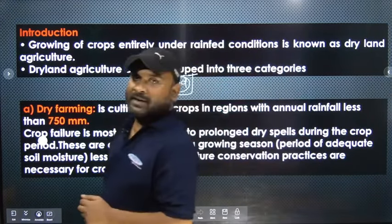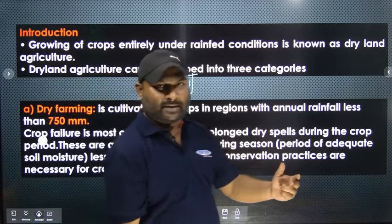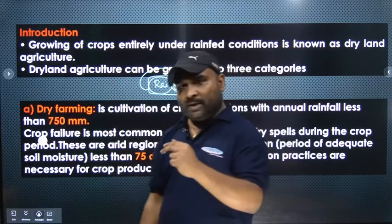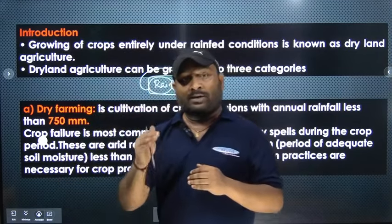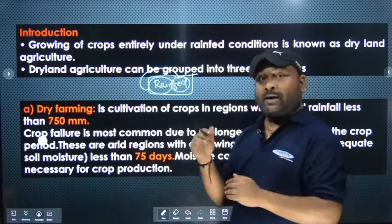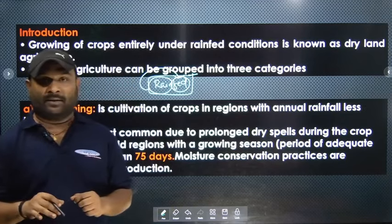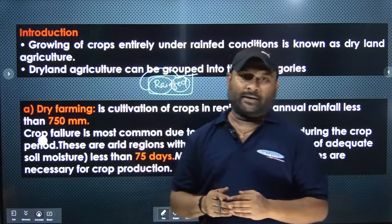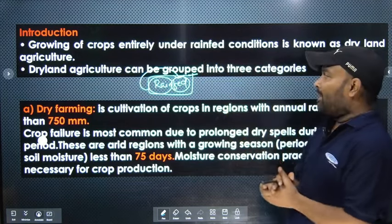Dryland agriculture refers to agriculture that is dependent on rainfall, practiced in areas where annual rainfall is less than 600–700 mm and there is no irrigation facility. The crop production depends entirely on rainfall. Growing crops entirely under rain-fed conditions is what we call dryland agriculture.